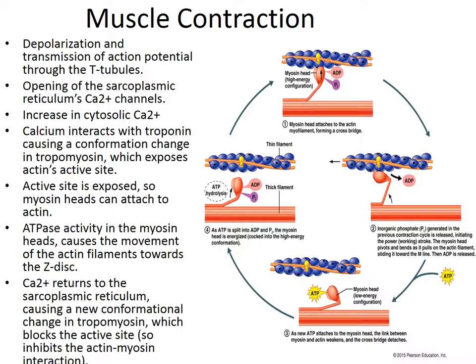The sliding filament mechanism involves the attachment of myosin crossbridges being inhibited in a resting muscle by the presence of tropomyosin, which covers the active sites on the G-actin. When calcium ions are released from the terminal cisternae by the action potential, they bind to troponin, changing its shape. The troponin then pulls on the tropomyosin so that the binding sites on actin are exposed.